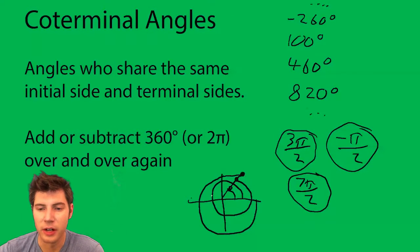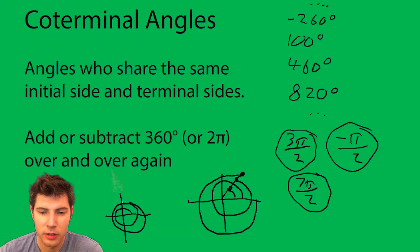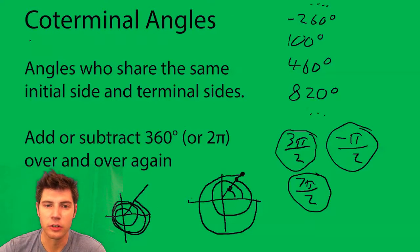It doesn't matter how many times you go around. If it ends in the same terminal side, they're called coterminal angles.